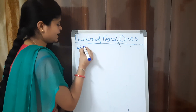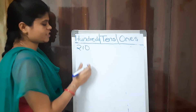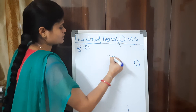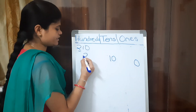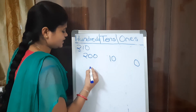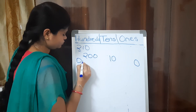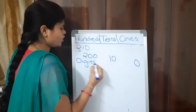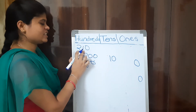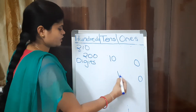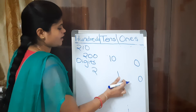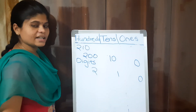First example: 210. How to write 210 in place values? 0 ones, 1 ten (which is 10), and 2 hundreds. In digits: what is in 1s place of 210? 0. In 10s place? 1. In 100s place? 2. So 210 in digits is 2, 1, 0.